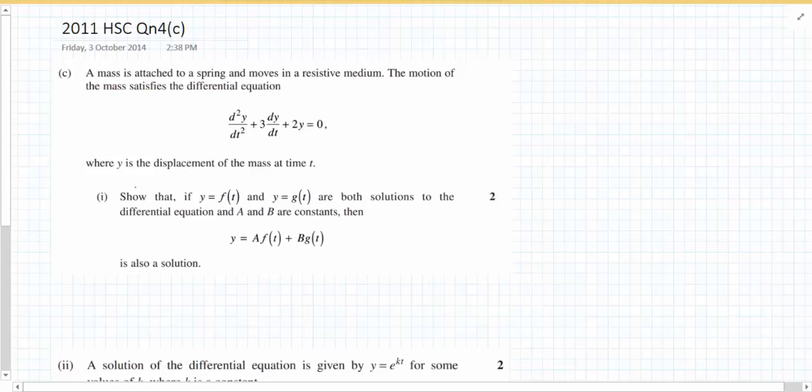Part 1 show that if y equals f(t) and y equals g(t) are both solutions to the differential equation, and a and b are constants, then y equals a f(t) plus b g(t) is also a solution.